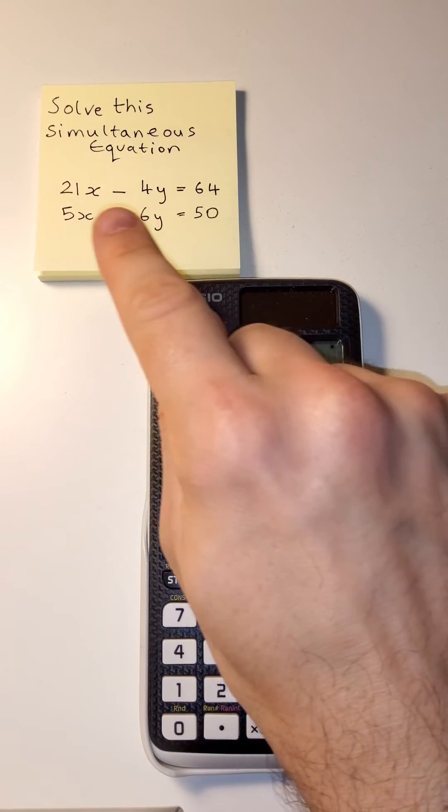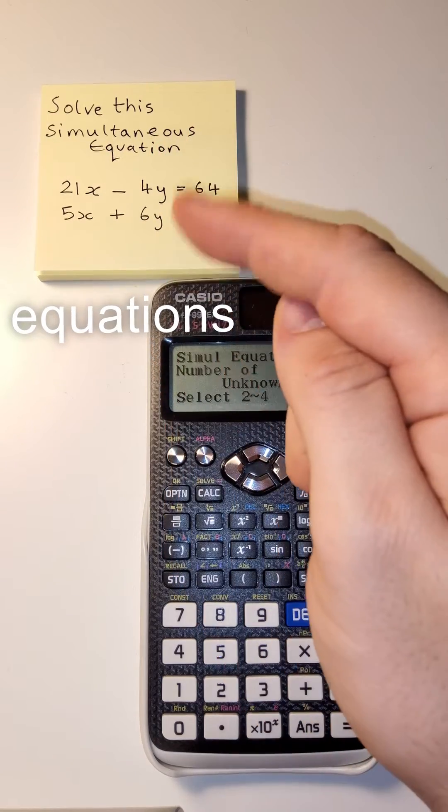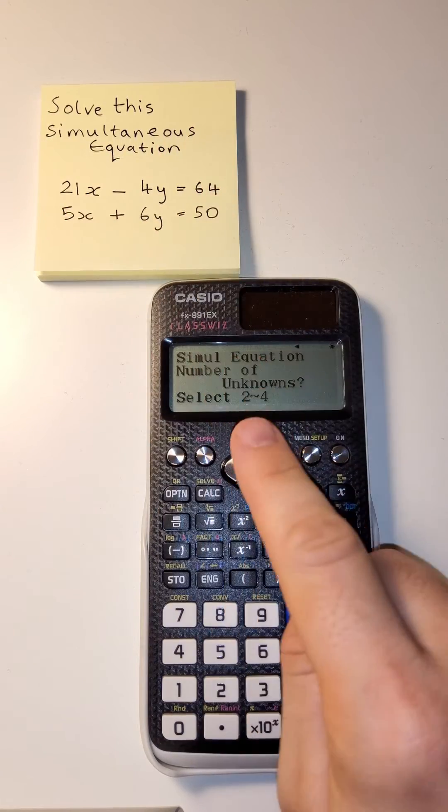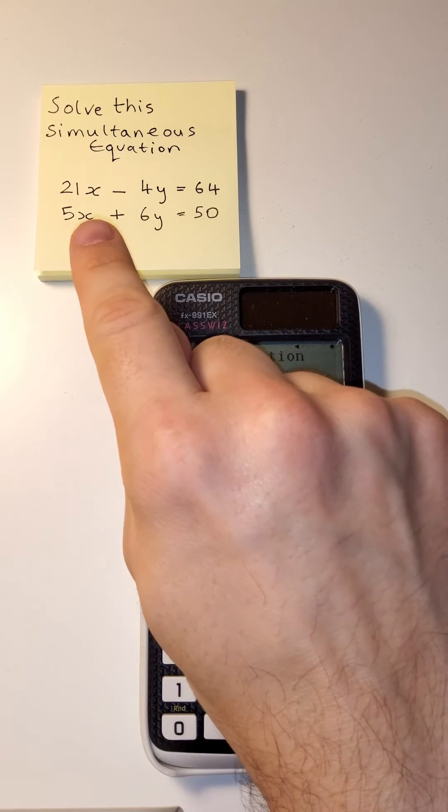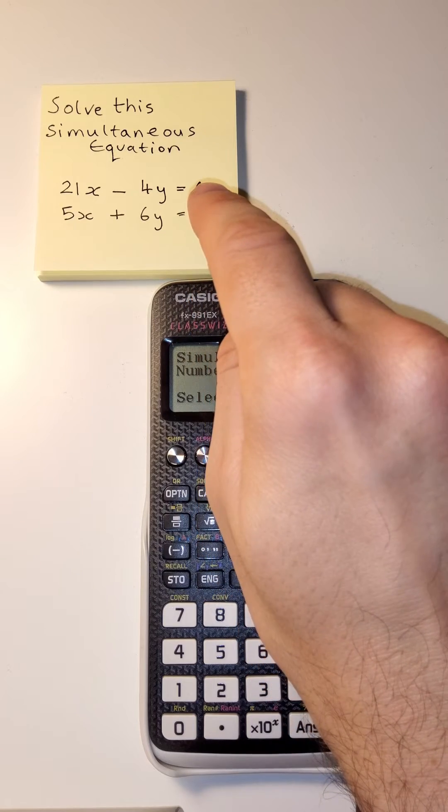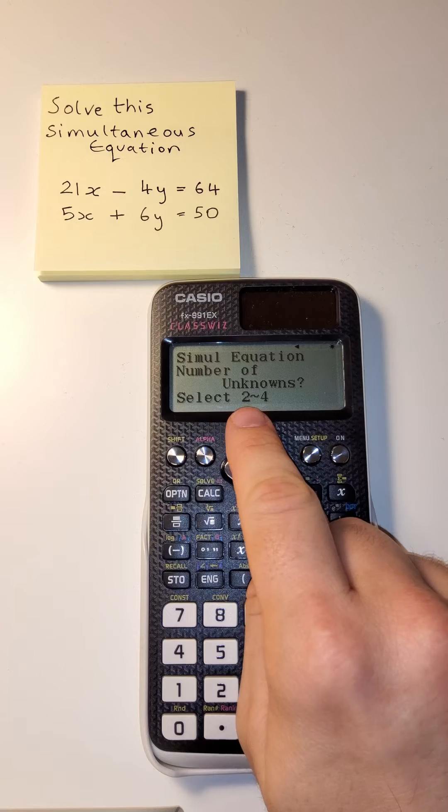How many unknowns do we have? Well here we've got X and Y, so we've got two unknowns. Not the amount of equations we have, it's the amount of unknowns. But you can see it goes up to four here. So you can have an equation with four unknowns. That means you need four equations. Pretty useful. So we'll type in two.